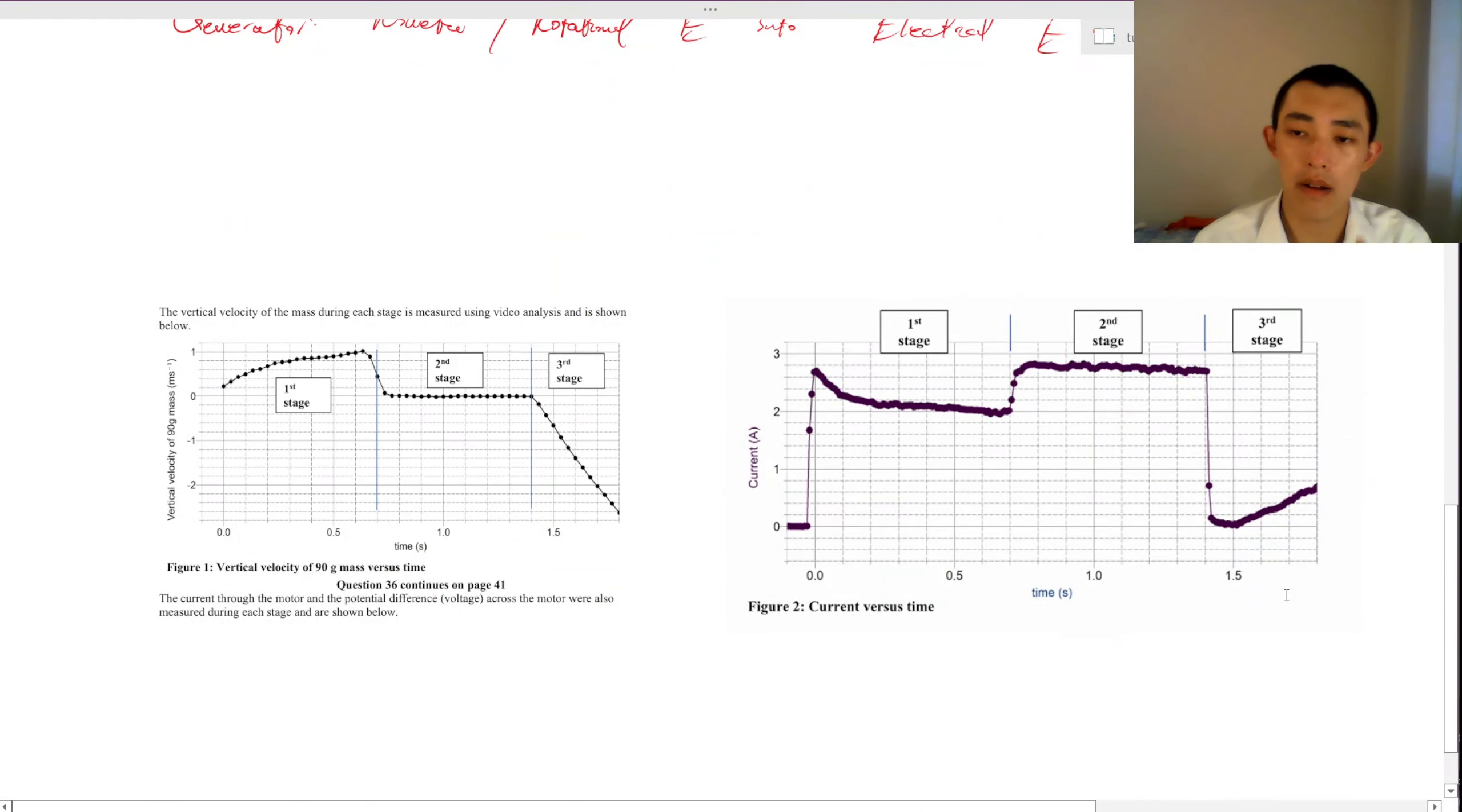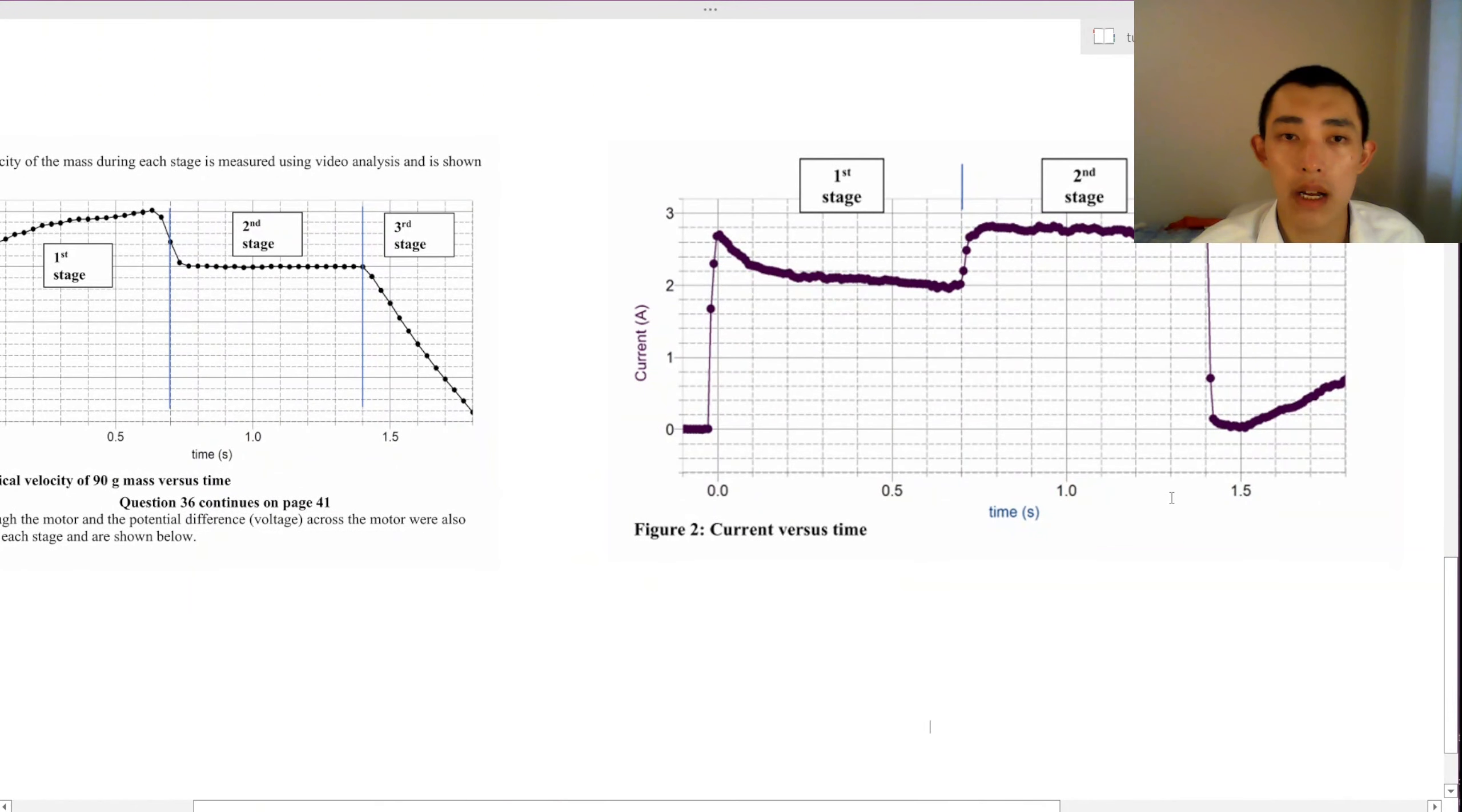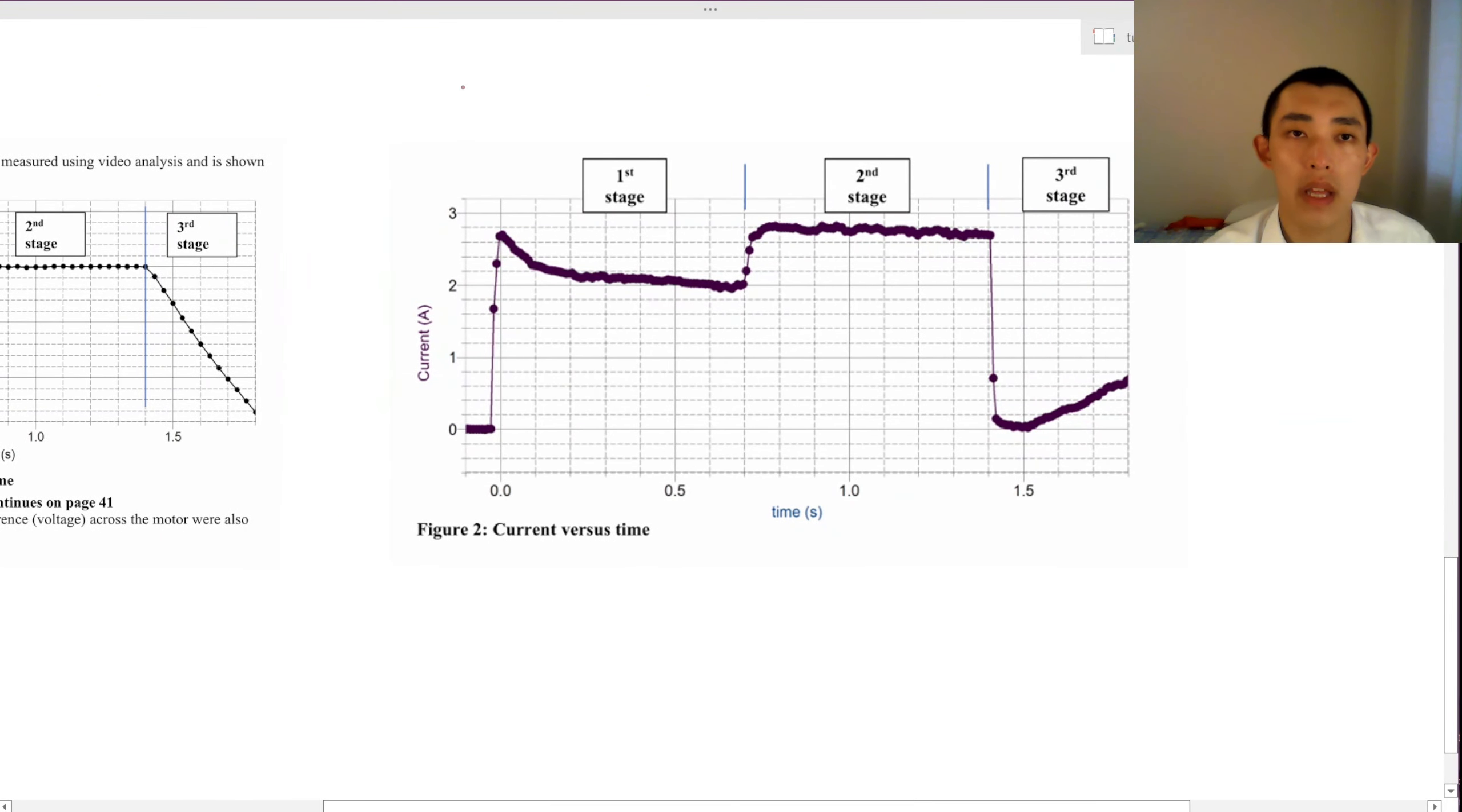Now let's extend ourselves and think about what happens when you change the mass. So let's think about if I, this was with a 90 gram mass. What happens if I use, let's say, a 100 gram mass or a 200 gram mass? What would happen to the current curve?